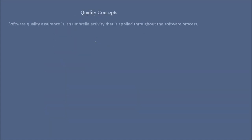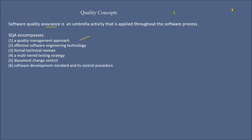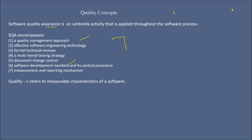Software quality assurance is an umbrella activity that is applied throughout the process — software process means from inception to the end. SQA has a quality management approach, effective software engineering technology, formal technical reviews, a multi-tiered testing strategy, document change control, software development standards and control procedures, and a measurement and reporting mechanism. That is why it is called an umbrella activity which is ongoing in the project.